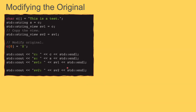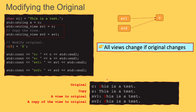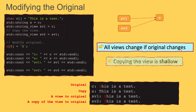Another thing to know about string view is that if you create a string view and then copy that string view to another string view, now you will have two views to the same original. That means if I change the original, both views should change. In our example, when I modify the original and print SV1 and SV2, both have changed because these are just views to our original. So what you need to take away is that all views change if the original changes, and copying the view is a shallow copy.